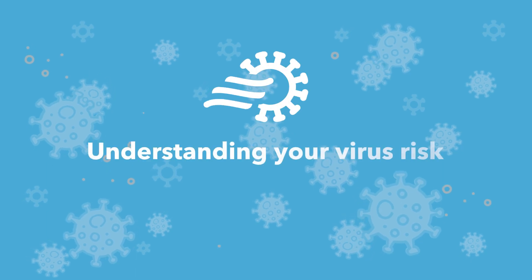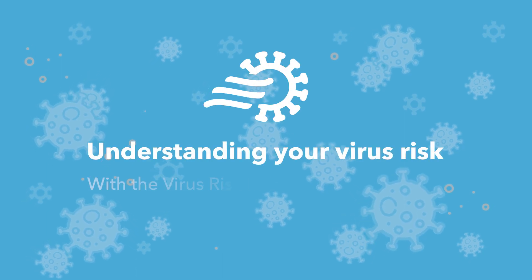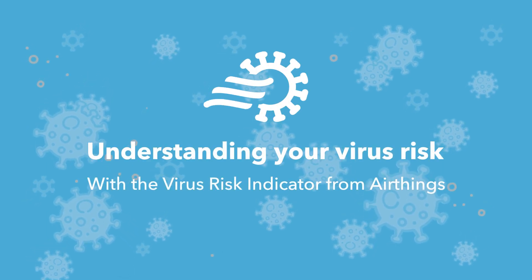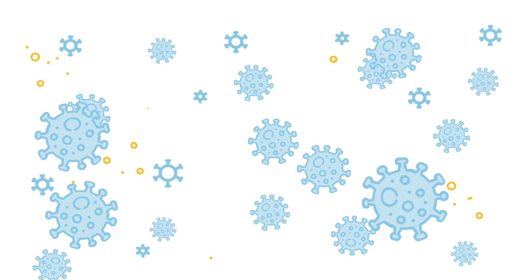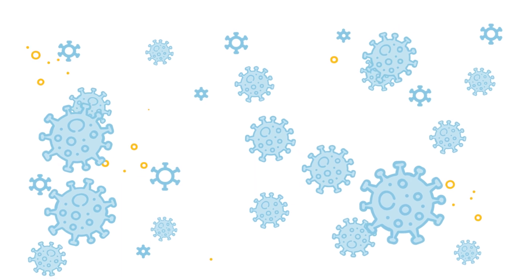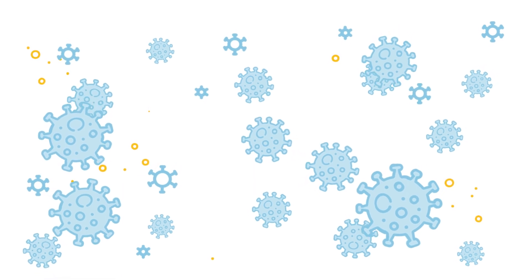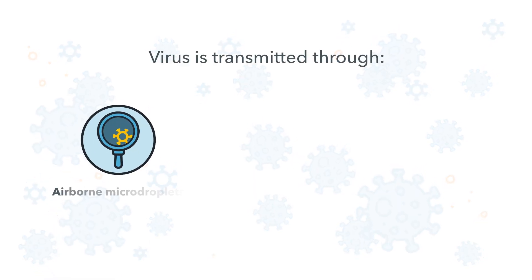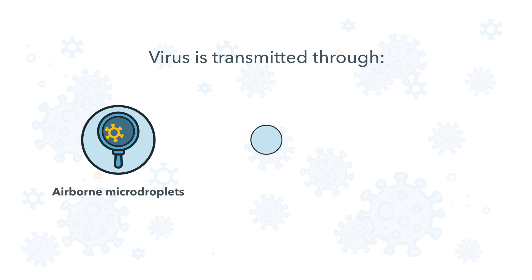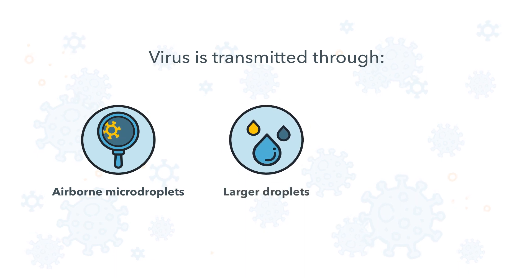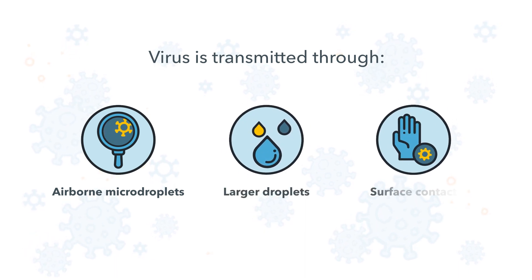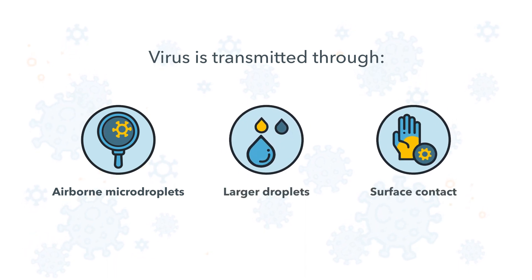Understanding your virus risk with the Virus Risk Indicator from AirThings. Virus is transmitted in several different ways, including through airborne micro-droplets, larger droplets from sneezing or coughing, or surface contact.